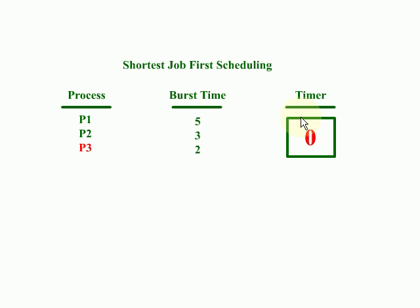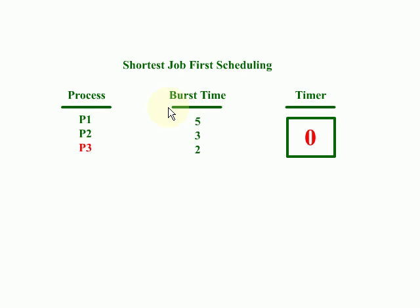We have our same problem as in FCFS: three processes P1, P2, and P3 with burst times 5, 3, and 2. But here the algorithm we are using is SJF, so we will be executing the shortest job first. According to the burst times, P3 should be executed first because its burst time of 2 is smaller than the other processes. Once P3 is finished, P2 has the next shortest burst time, so we execute P2 next.